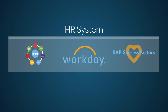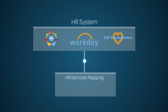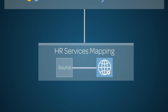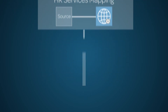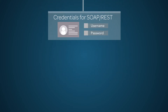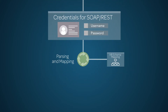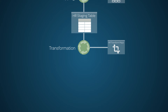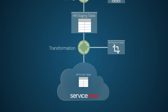So how do all of these pieces fit together in an inbound integration? A schedule or an event triggered in the ServiceNow platform starts the process of pulling data from the HR system using the HR Service Mapping configuration, which binds the source and web services. Credentials allow access so that the SOAP and REST services can retrieve the data. The data is parsed and mapped using the HR Schema Mapping and sent to the HR Staging table. Finally, the data in the table is transformed via the HR Transform maps and sent to the HR Profile table in the platform.